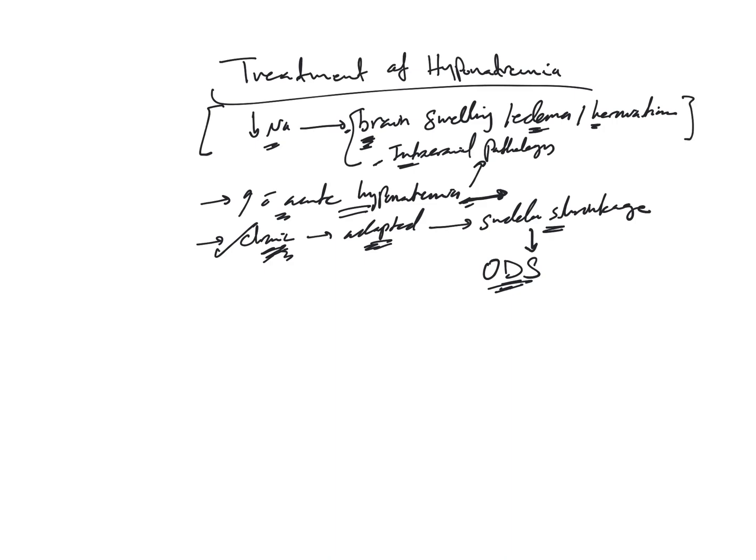With chronic hyponatremia, you gave the cell time to adapt to the swelling, so you need to give it time to adapt to shrinkage as well — shrink it slowly. If you shrink it very quickly you can induce osmotic demyelination syndrome. In contrast, correcting acute hyponatremia quickly should be fine, since the cells swell and shrink quickly. However, the risk of symptoms is greater with acute than chronic hyponatremia.